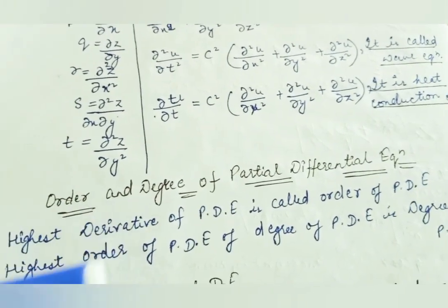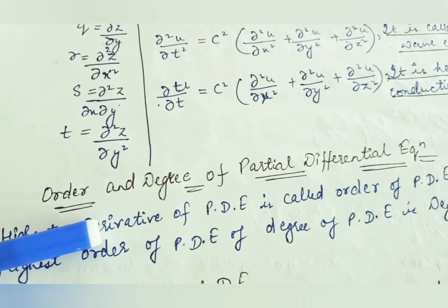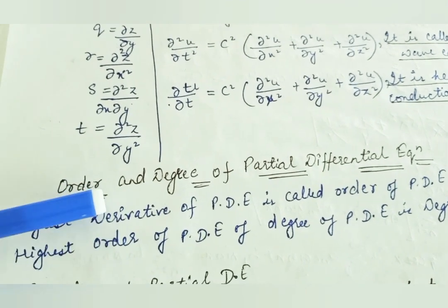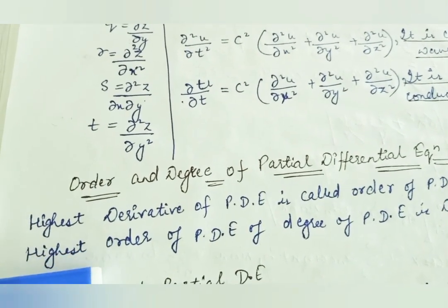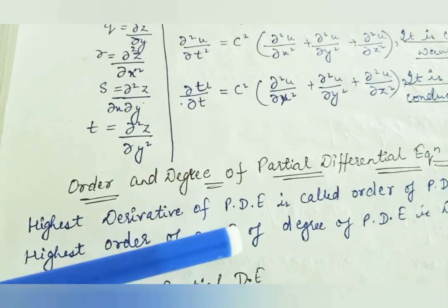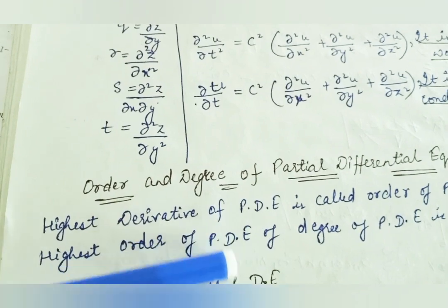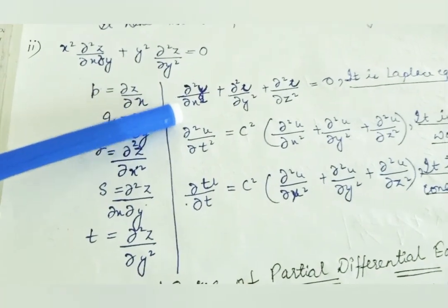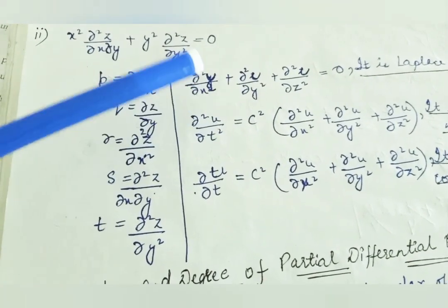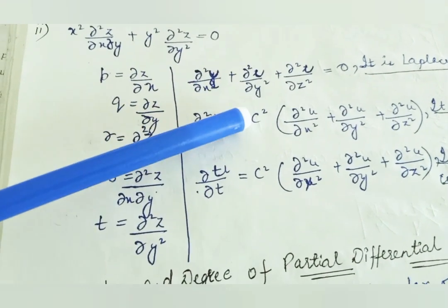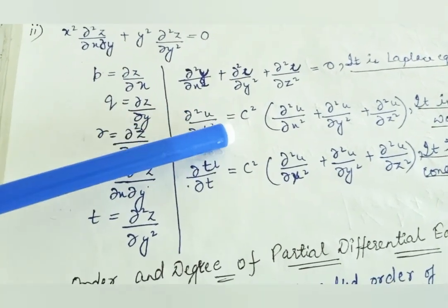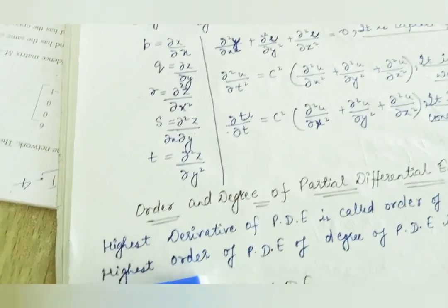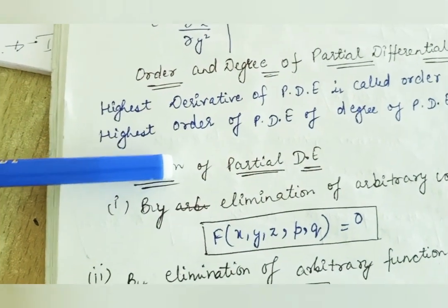The order and degree of a partial differential equation are defined by the highest derivative. The maximum order here is 2 and the power is 1. You can check the order and degree, which depends on the formation of the equation.